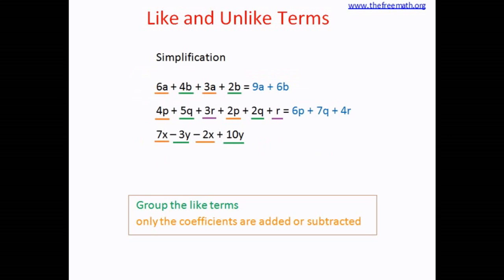7x minus 2x. So 7x minus 2x equals 5x. And minus 3y plus 10y. That means 10y minus 3y equals 7y. So the simplified expression looks like this: 5x plus 7y.